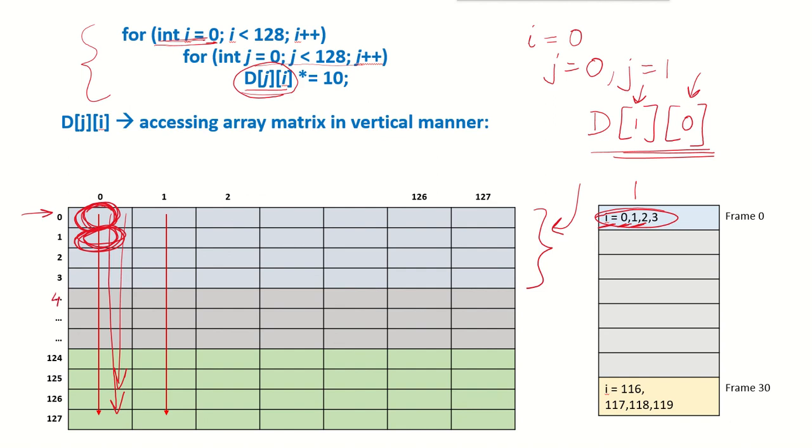But when it comes to this 4th row then again it is going to be a page fault because now this will lie in frame 1, so frame 1 is having 4, 5, 6, 7.